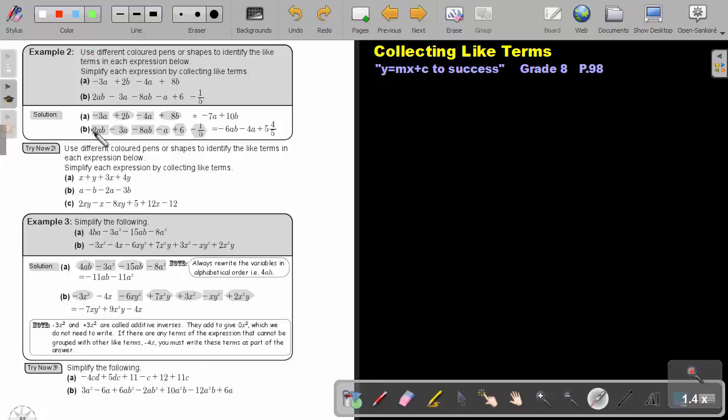Let's first look at example 2. Use different color pens or shapes to identify the like terms in each expression below. Simplify each expression by collecting like terms. Now for the first one I'm just going to use my highlighters. If you look in this expression there's four terms but negative 3a will be like to negative 4a. I highlight it from this sign because the number grabs the sign in front of it.